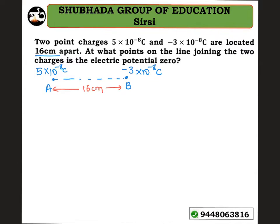Now, let's mark a random point on the line — say this is point C — which is at a distance of x from A. Then the distance from C to B is 16 minus x centimeters.